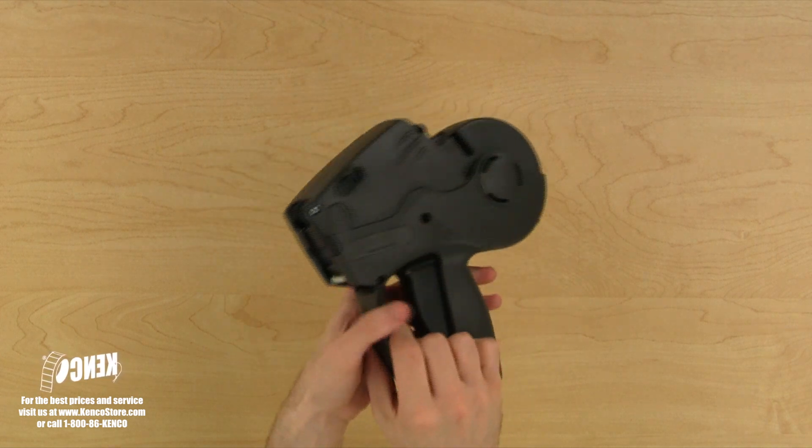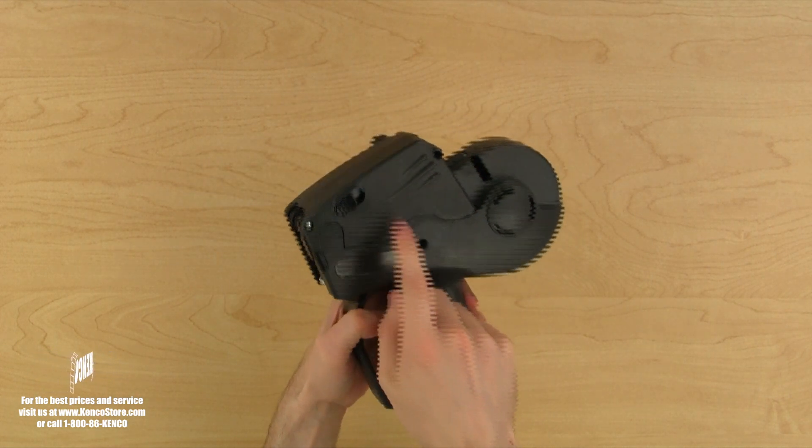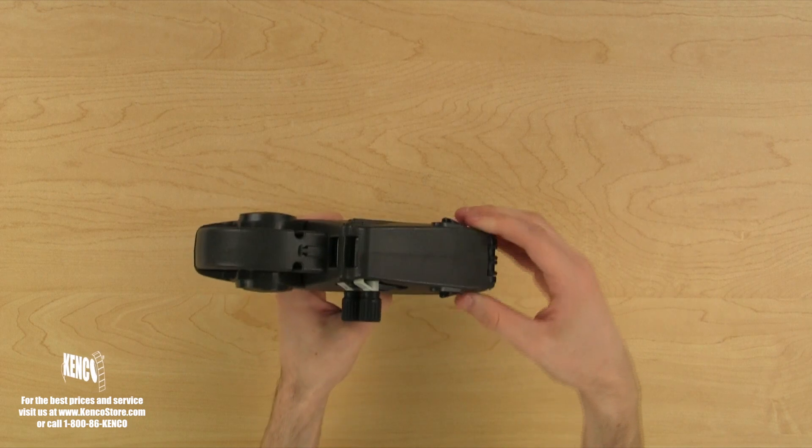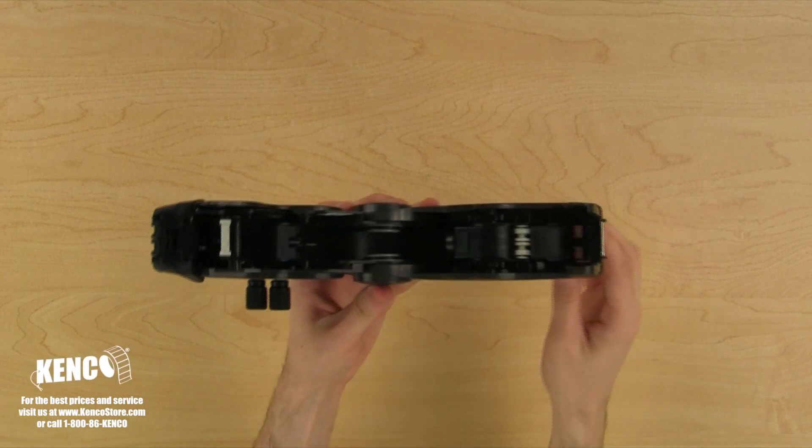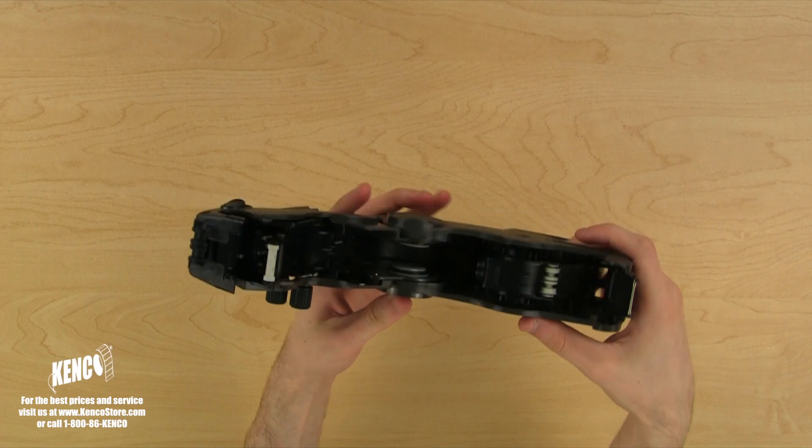On each side of the gun, you will find a latch. These latches will open the upper housing assembly. Let's pull both of those latches towards the back of the gun and lift the upper housing assembly so we can take a peek inside.